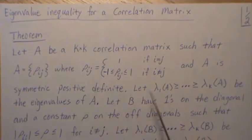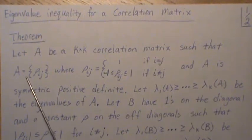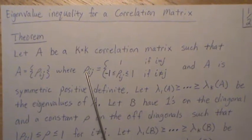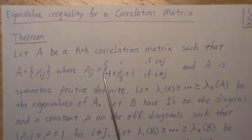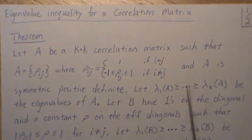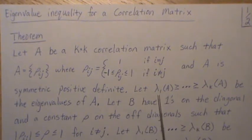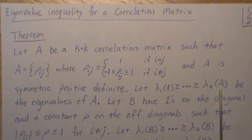Let A be a k-by-k correlation matrix such that the entries are ρ_ij, where ρ_ij equals 1 if i equals j, and if not, it's just whatever the value is between negative 1 and 1. And A is symmetric positive definite. Let λ_1(A) through λ_k(A) be the ordered eigenvalues for A.